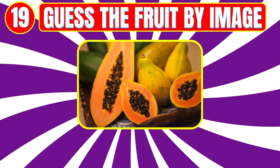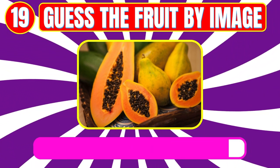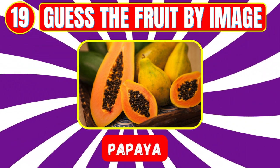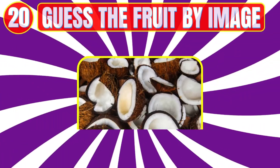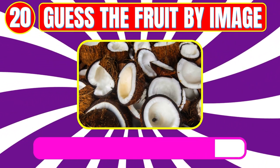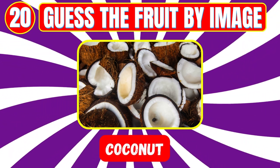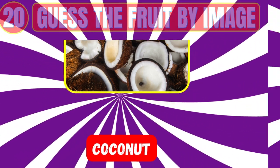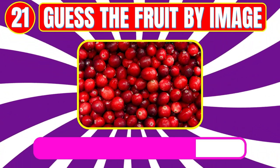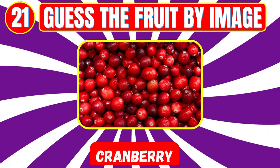Level number nineteen. Guess the fruit by image. Fruit name is papaya. Level number twenty. Guess the fruit by image. Fruit name is coconut. Level number twenty-one. Guess the fruit by image. Fruit name is cranberry.